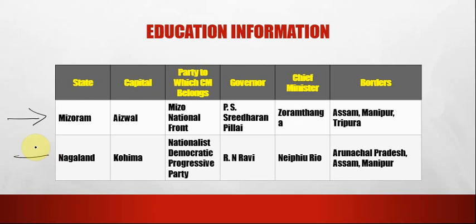The next state is Nagaland. The capital of Nagaland is Kohima. The party to which the CM belongs is Nationalist Democratic Progressive Party (NDPP). The governor is R.N. Ravi. The chief minister is Neiphiu Rio. The borders are Arunachal Pradesh, Assam and Manipur.